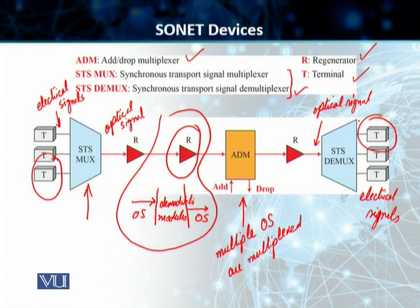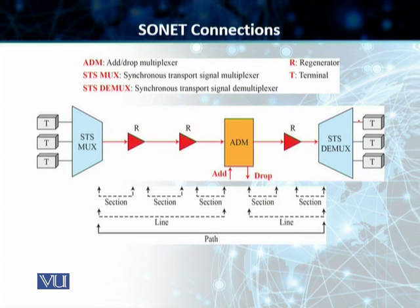In the case of the internet, for example, a terminal can be a router that is using our SONET network to transport its data over long distances using the optical fiber lines. In terms of connections, we have three different types used in a SONET network: the first is called a section, the second is called a line, and the third is called a path.